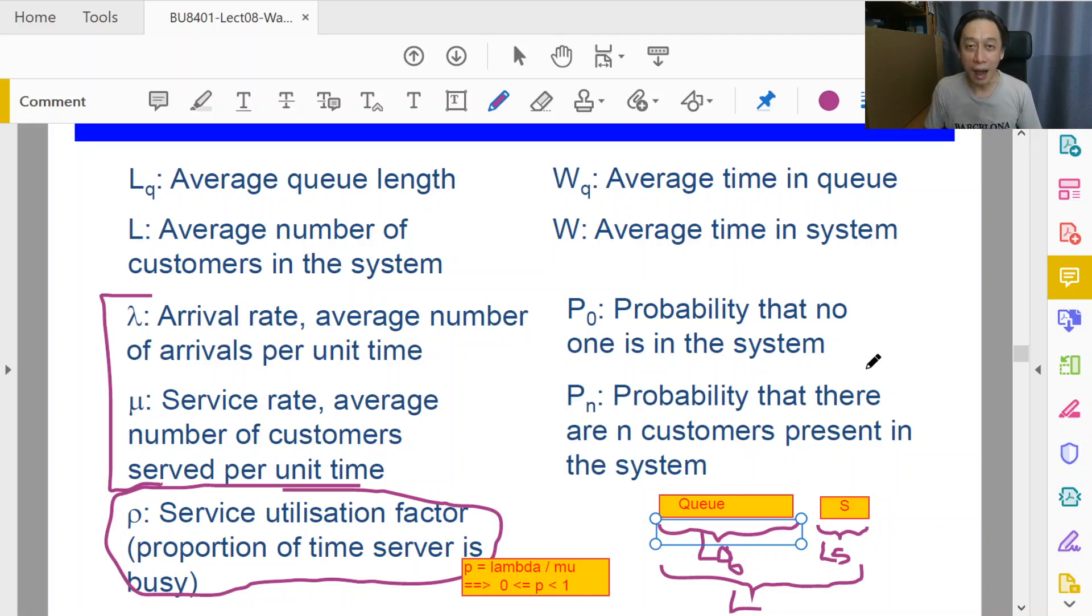Average wise, that's why we need the word averages. Instantaneously this may not be true, but average wise it is correct that L equals Lq plus Ls. What is Ls? Average number of customers in the service station.